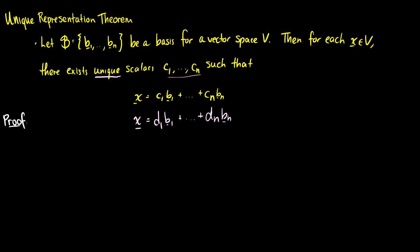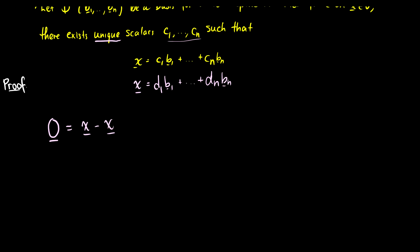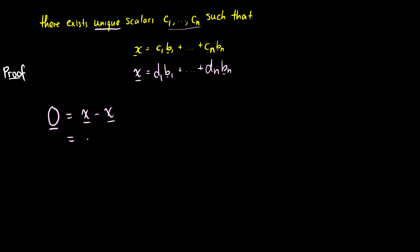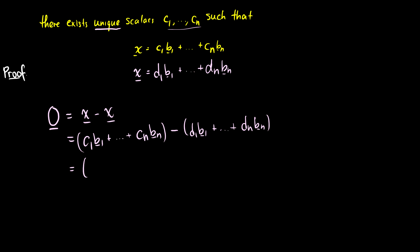We'll work with the zero vector, which can be written as vector x minus vector x. Taking the first x as our original representation c1·b1 up to cn·bn, and subtracting the second representation d1·b1 up to dn·bn, we can collect like terms to get (c1 minus d1)·b1, all the way up to (cn minus dn)·bn.